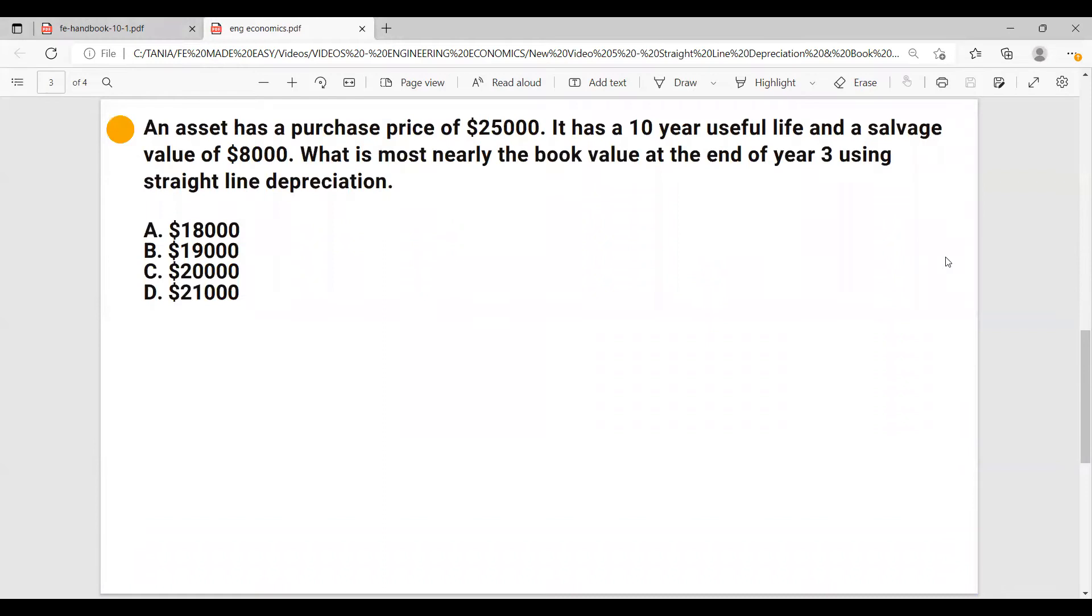An asset has a purchase price of $25,000. It has a 10-year useful life and a salvage value of $8,000. What is most nearly the book value at the end of year three using straight line depreciation?